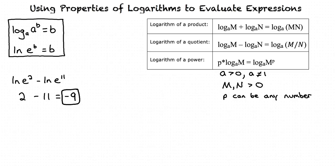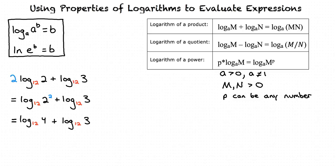How about you try the last example? 2 times log base 12 of 2 plus log base 12 of 3. Since we have a constant multiplied by the logarithm in the first term, we can use the logarithm of a power property to simplify. We now have log base 12 of 2 squared plus log base 12 of 3. 2 squared equals 4, so we have log base 12 of 4 plus log base 12 of 3.